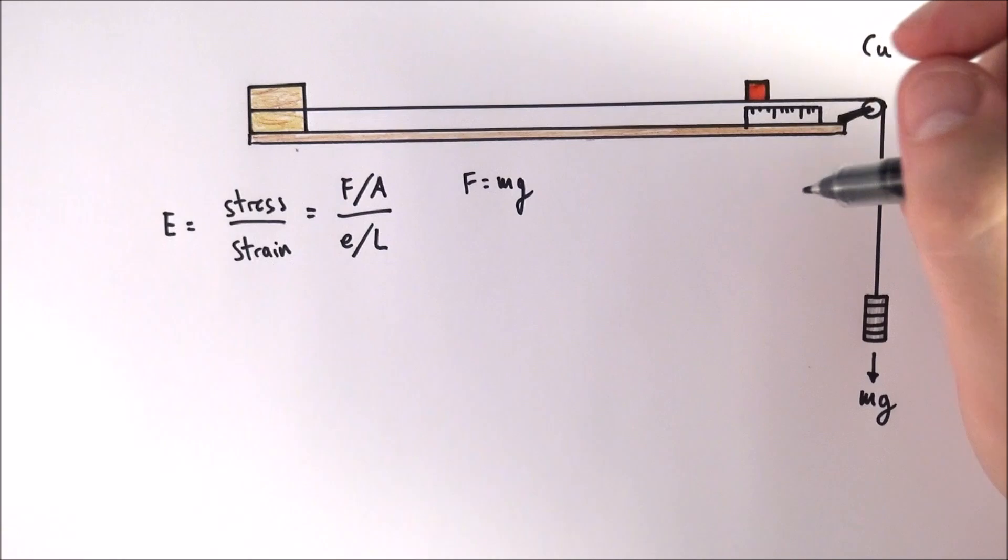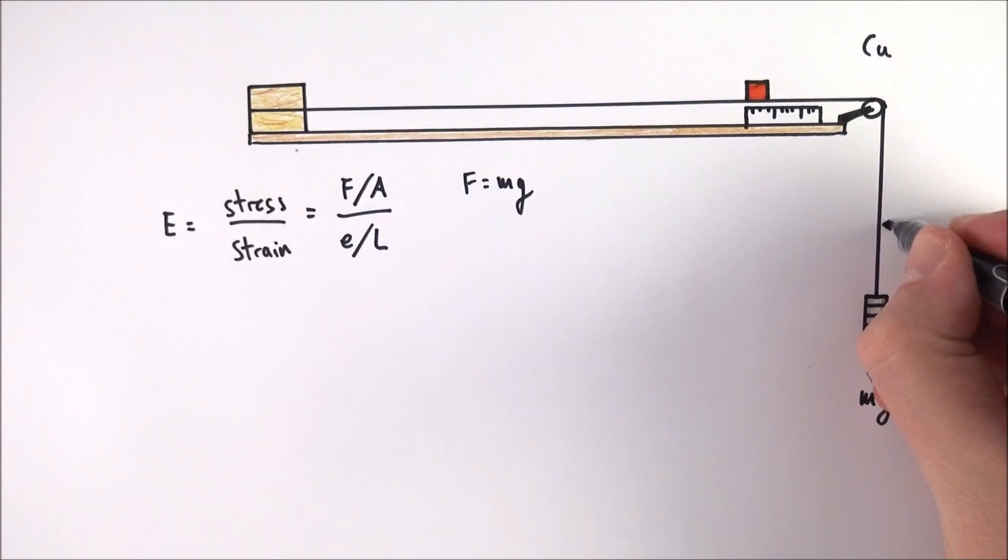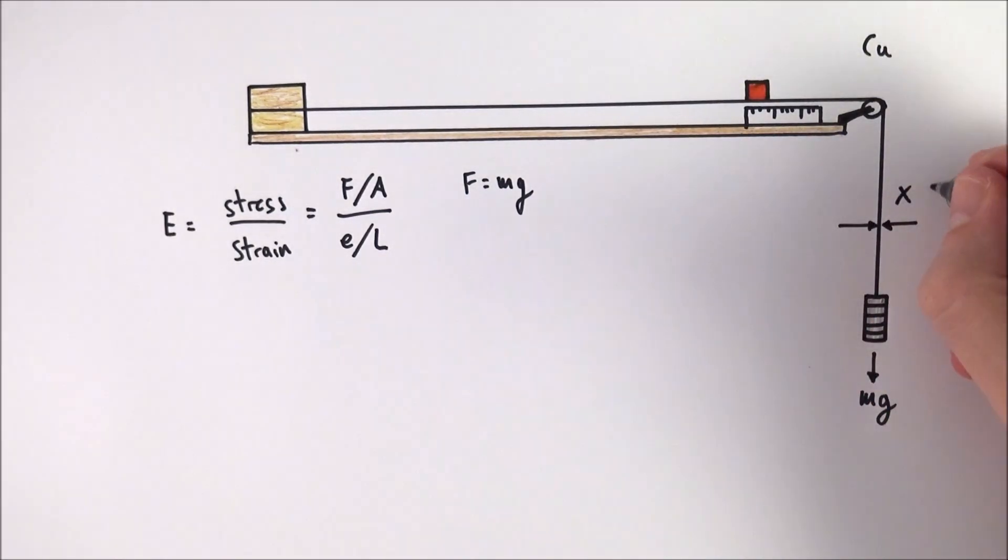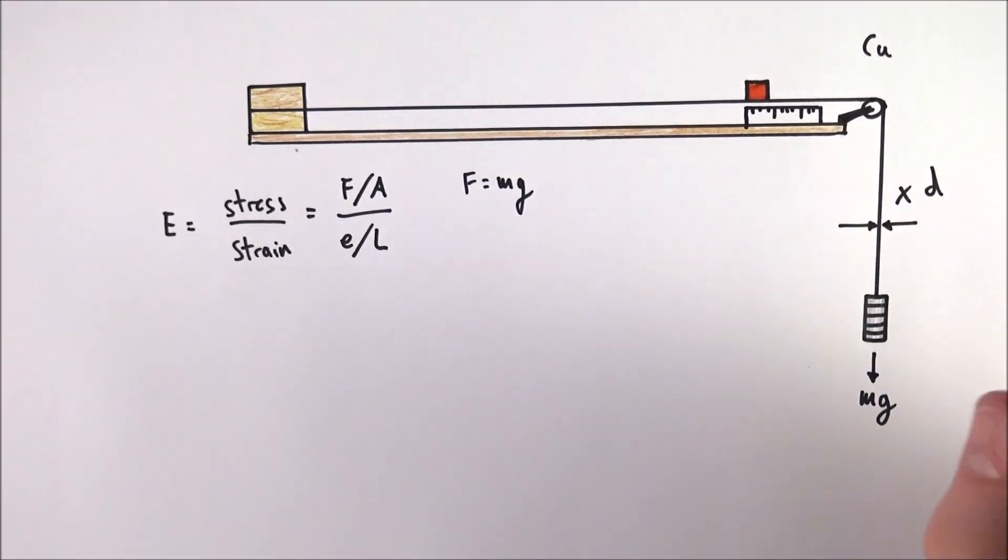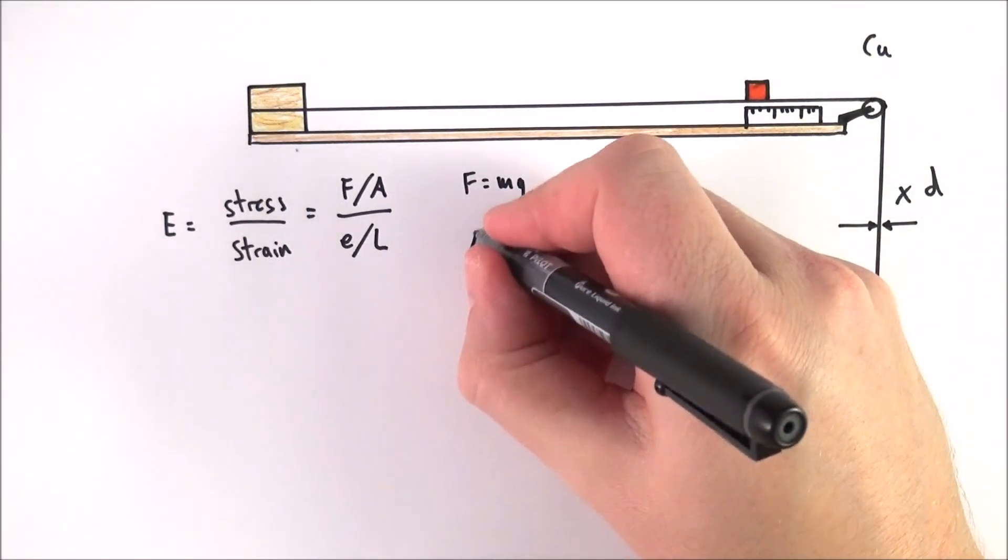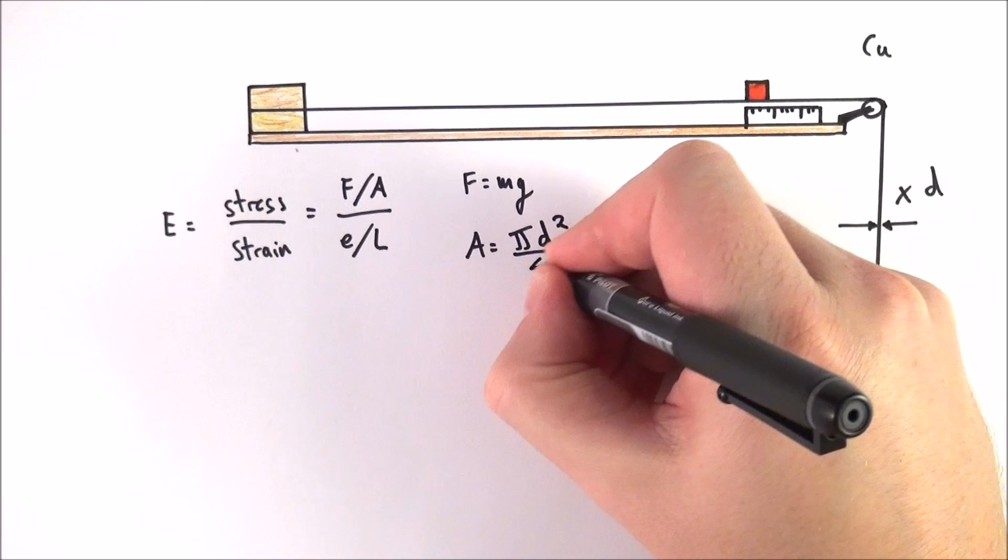And also we need to think about the area of that wire. What's the area? Well if we want to find out the area we need to measure the diameter. And what is really important is that you measure the diameter three times in three places to make sure that it is truly a circular kind of cross section. So the area is equal to pi r squared or pi d squared over 4.